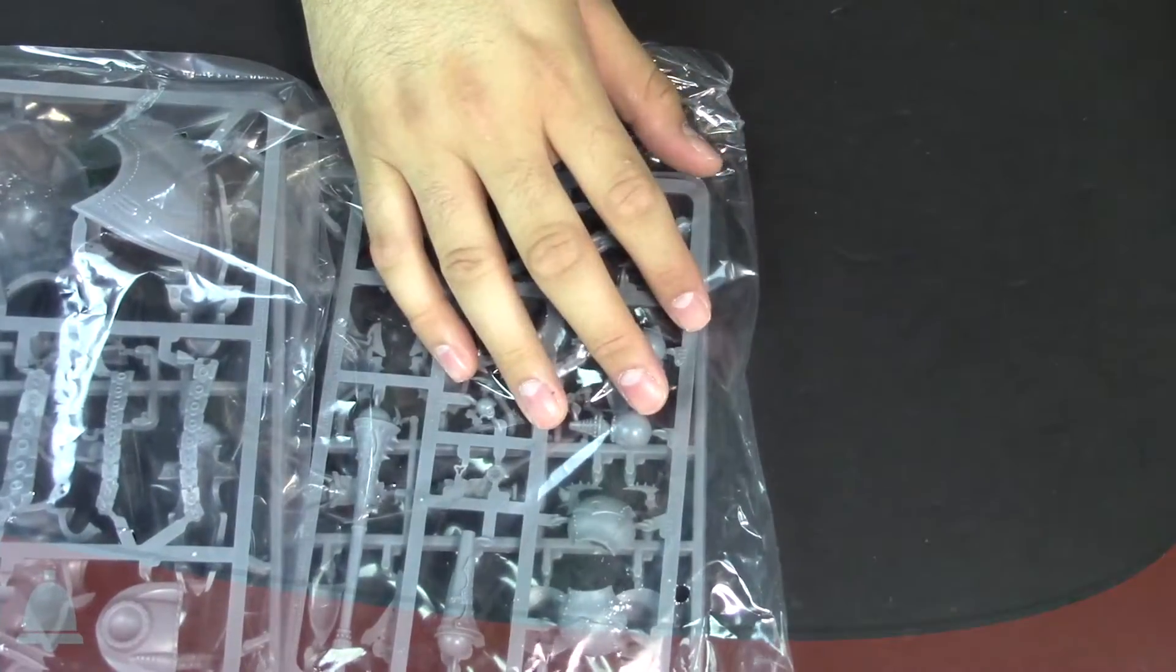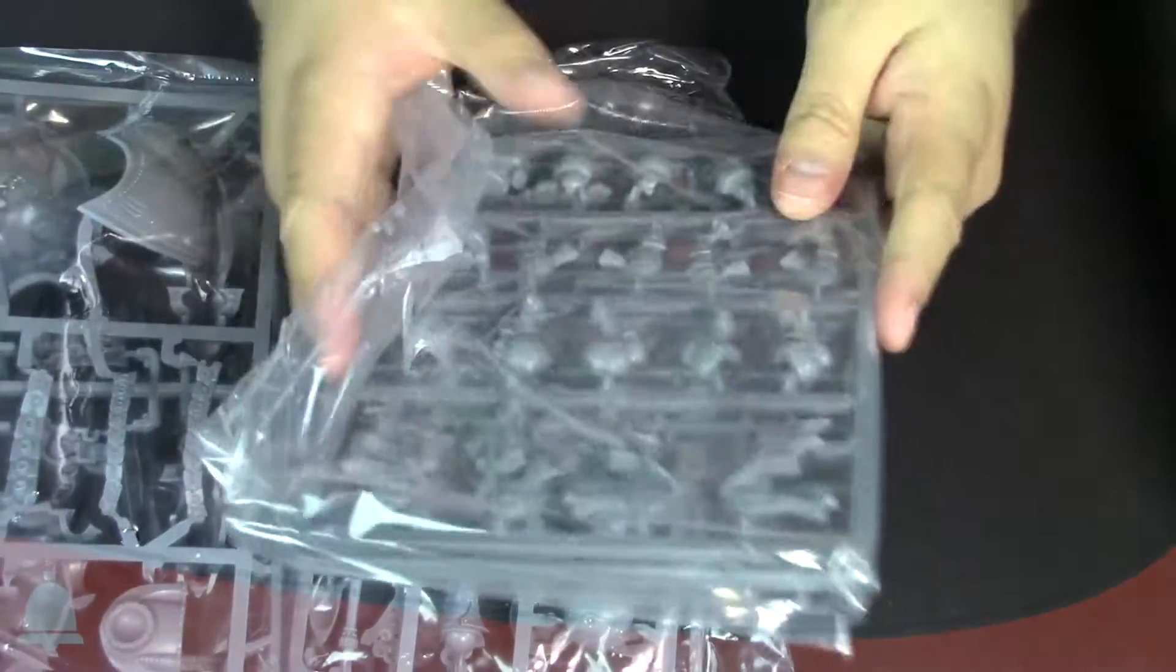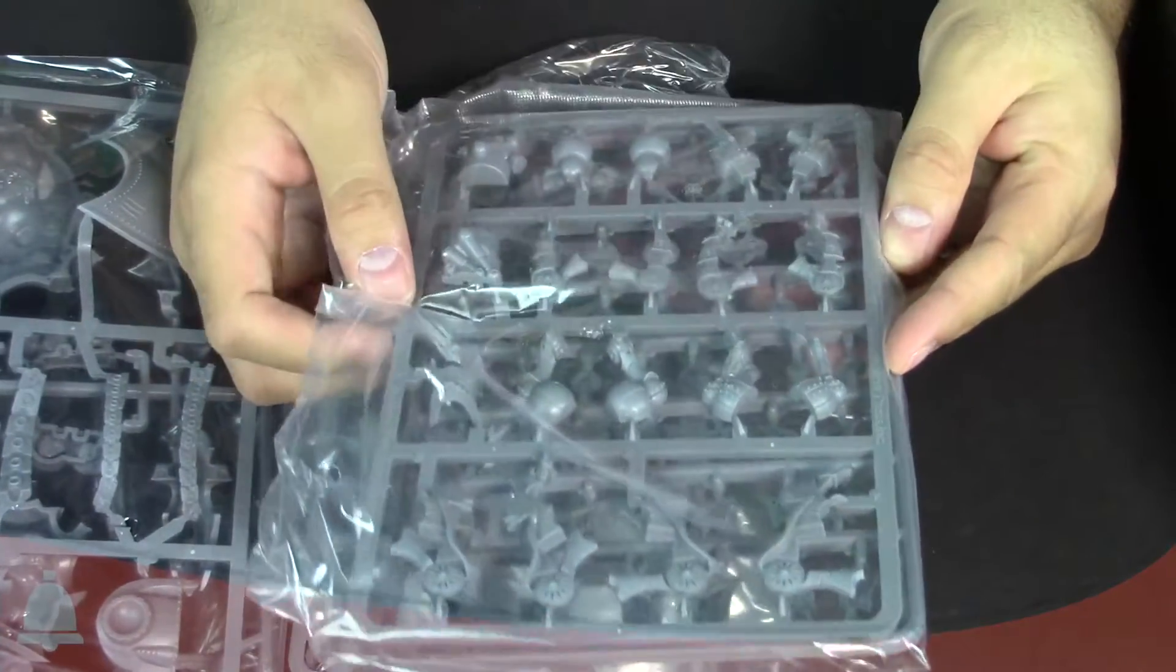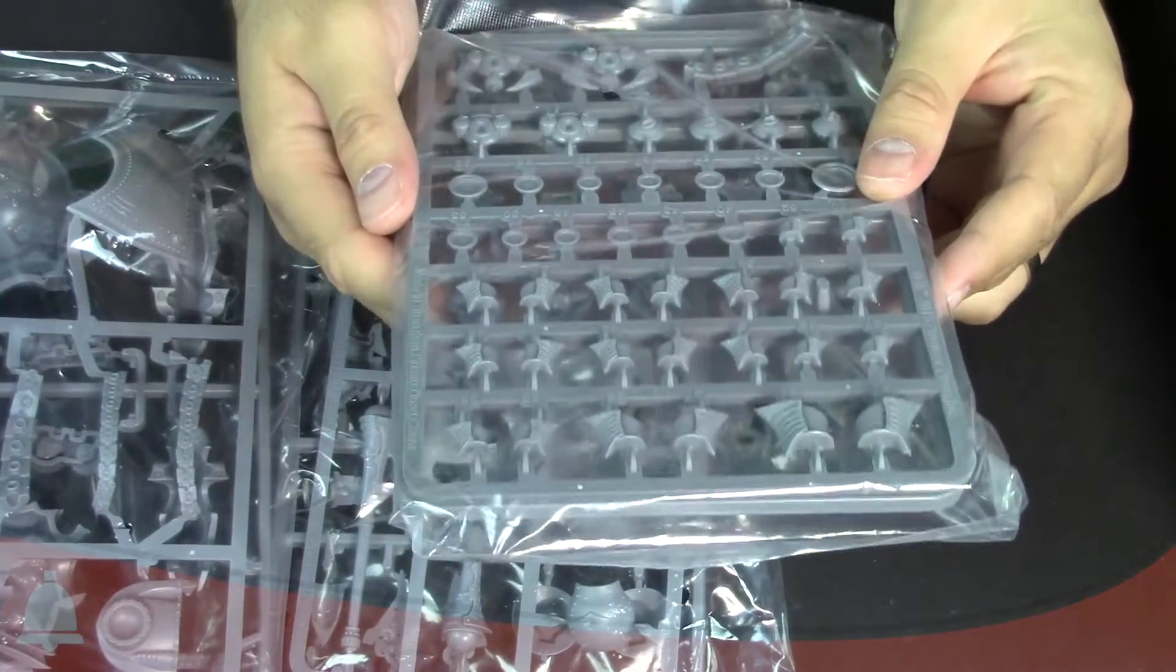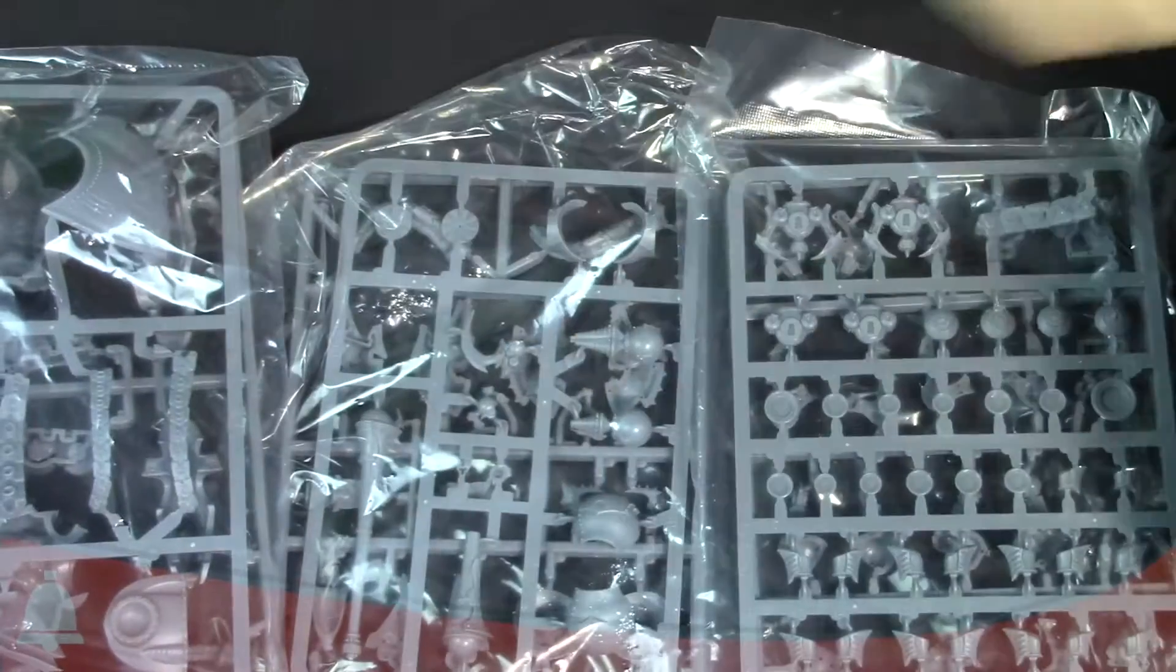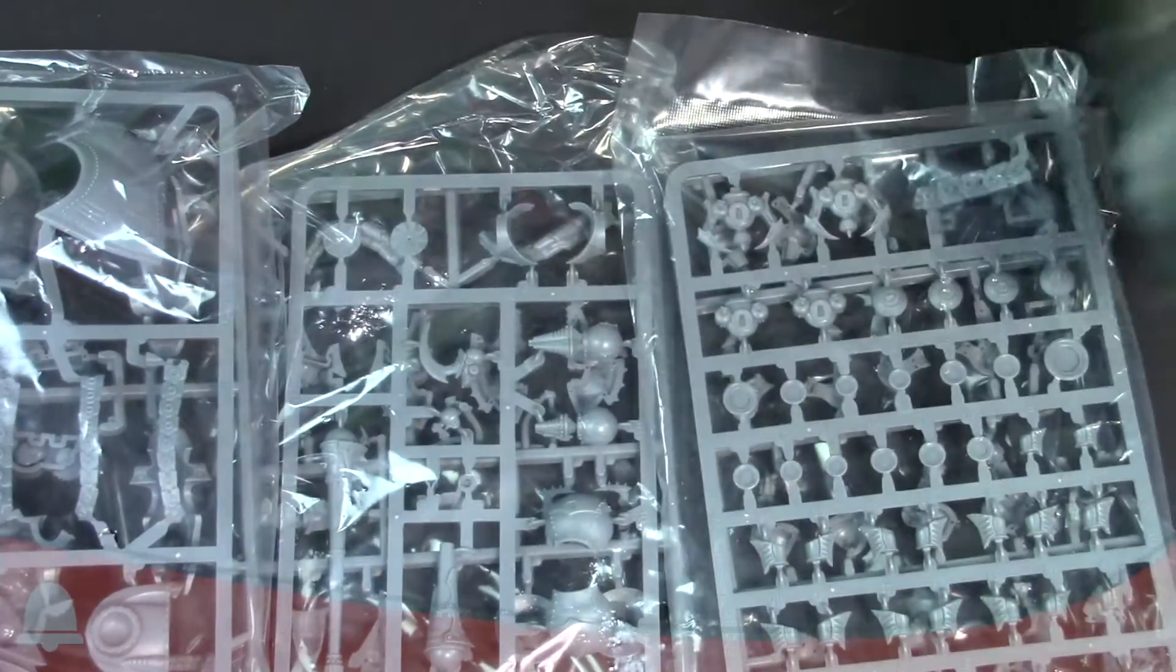Set that to the side again, and then a whole lot of extra bits here. We've got legs, we've got joints, we've got weapons, we've got the tentacle because you got to have that. What else is in the box? Let me move these to the side for now.